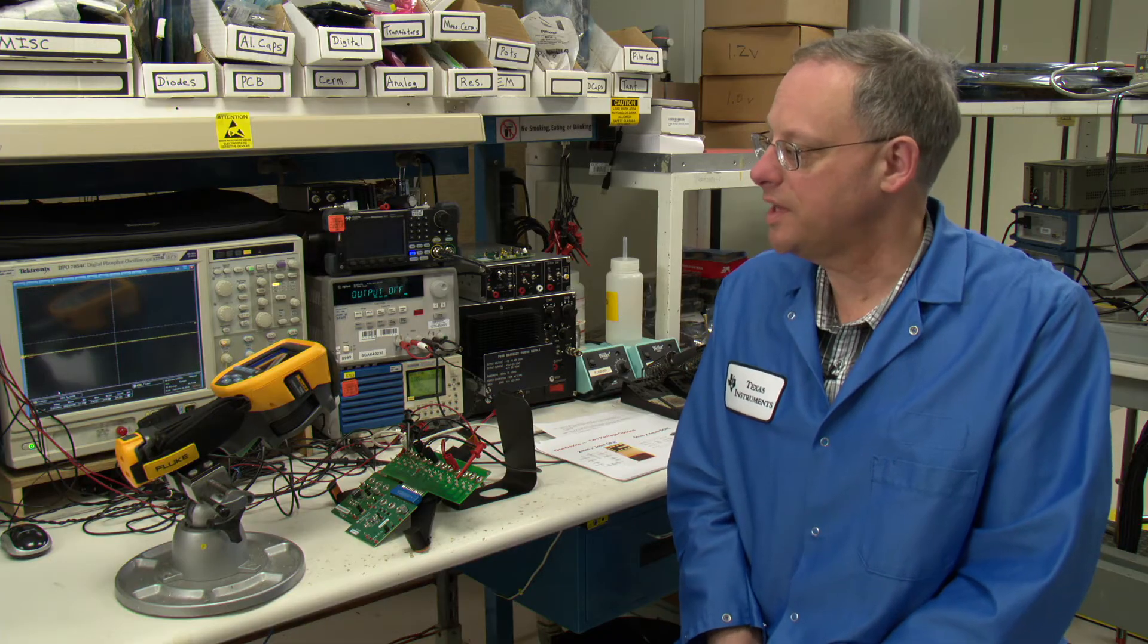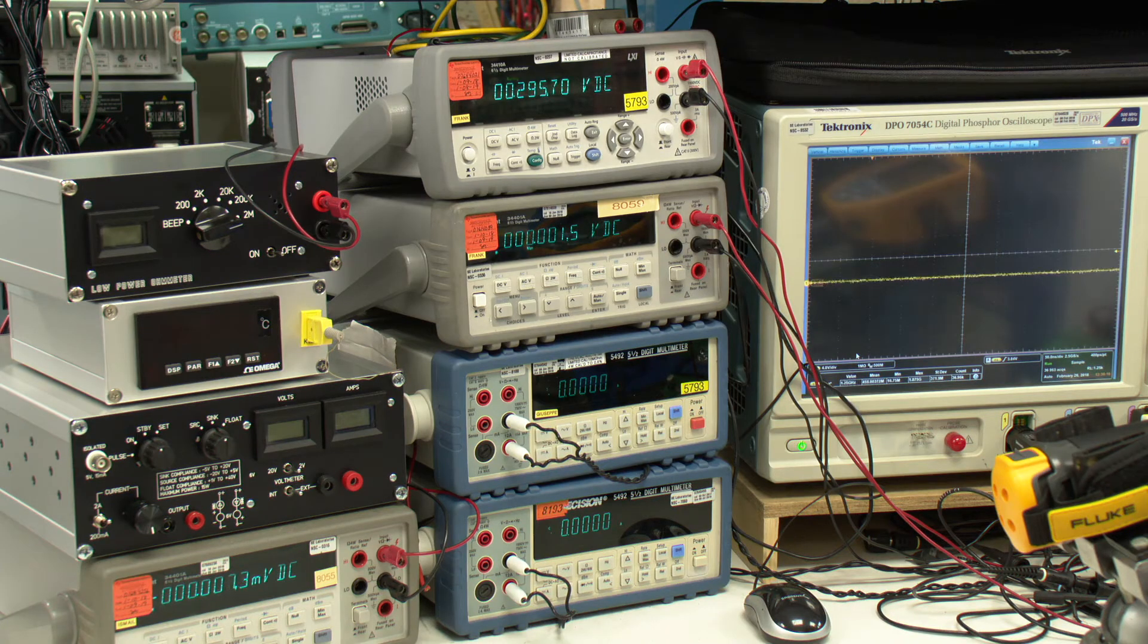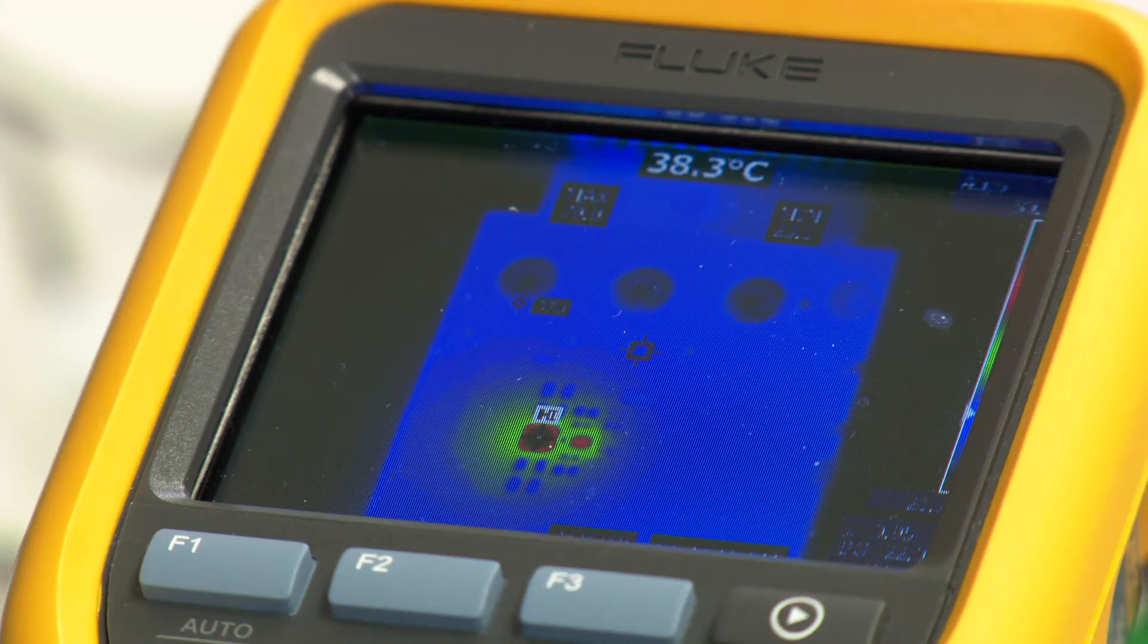The equipment that we'll use is an input power supply, an active load, and several DMMs to measure the input and output parameters of our regulator. Also, we have a thermal camera set up to look at the top case temperature of both packages so that we can determine what that temperature rise will be.